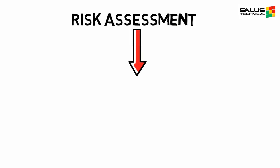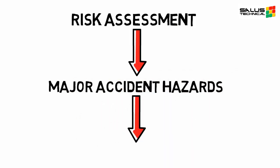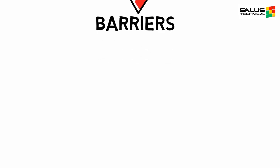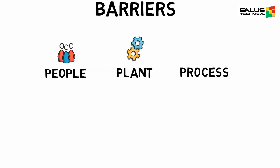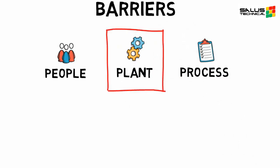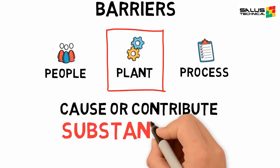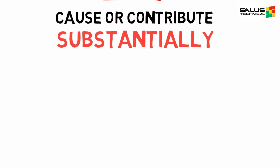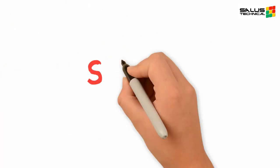In our risk assessments, we identify our major accidents and the barriers in place to prevent, control or mitigate them. These can be categorised as people, plant or process. Plant barriers are the physical equipment, including software, that we have on our installations. If a plant barrier's failure could cause or contribute substantially to a major accident, it is classified as a safety and environmental critical element, or a SECI.